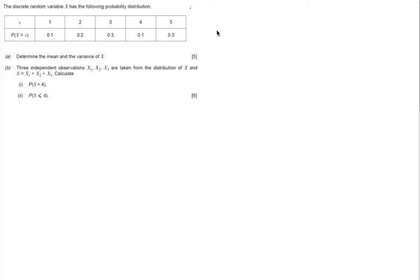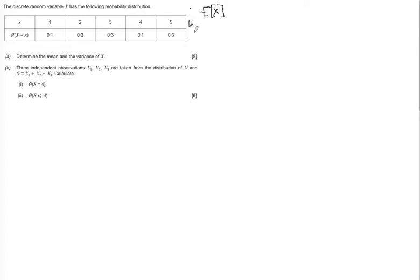The discrete random variable x has the probability distribution defined in the table below for x equals 1 to 5. Part a asks us to determine the mean and the variance of x.